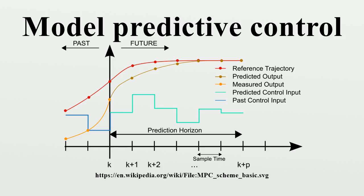MPC uses the current plant measurements, the current dynamic state of the process, the MPC models, and the process variable targets and limits to calculate future changes in the dependent variables.